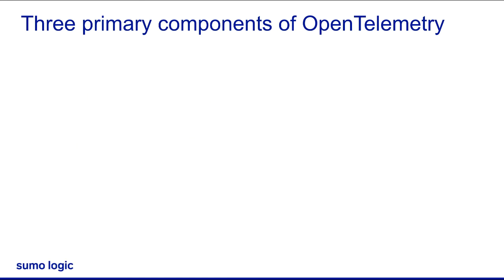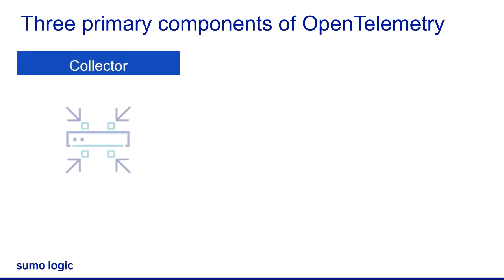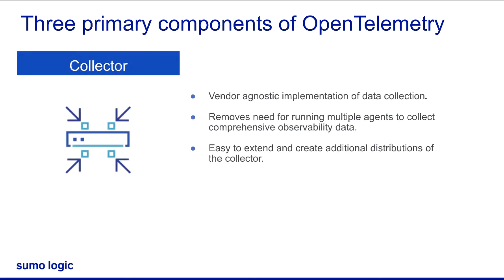Next is the collector. The collector is a vendor-neutral way to receive, process, transform, and export data. It is the single agent for all observability data, including logs, metrics, and traces. The collector is also designed to make it easy to extend and create additional distributions of the collector as needed.